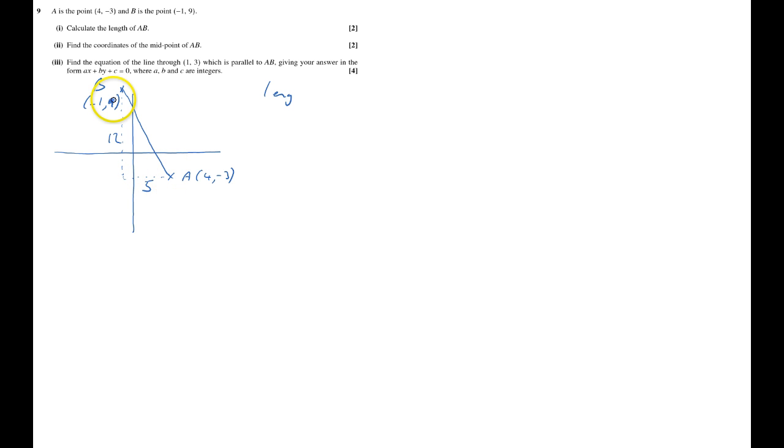So the length of AB equals the square root of 12 squared plus 5 squared, which equals the square root of 144 plus 25, which is 169. That equals 13. So that's the first bit.